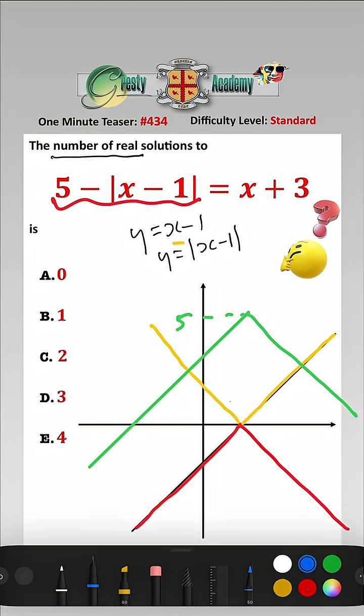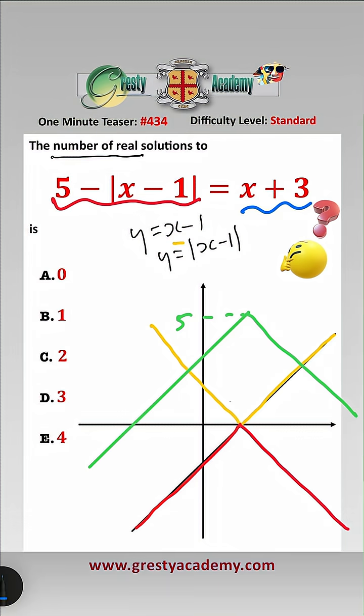All we need to do now is draw y equals x plus 3. Well, that basically is here, which is parallel to this here. So they never meet here, and they clearly meet at one point. So therefore, the answer is the number of real solutions is B1.